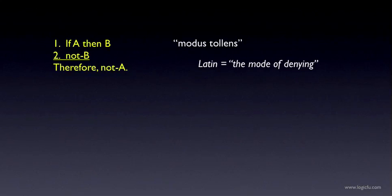This is modus tollens, and it's a valid argument form. The full Latin name is modus tollendo tollens, which means the mode of denying by denying. It refers to the fact that with this conditional form, we're denying the consequent by denying the antecedent. Everyone today just calls it modus tollens.